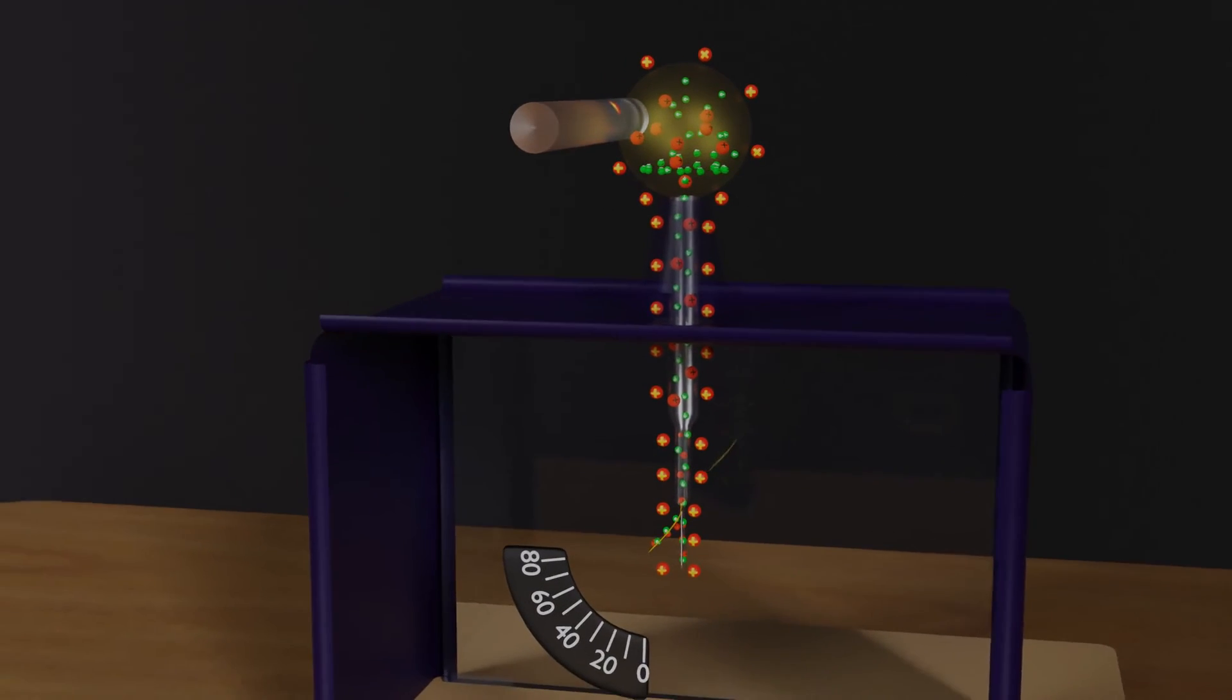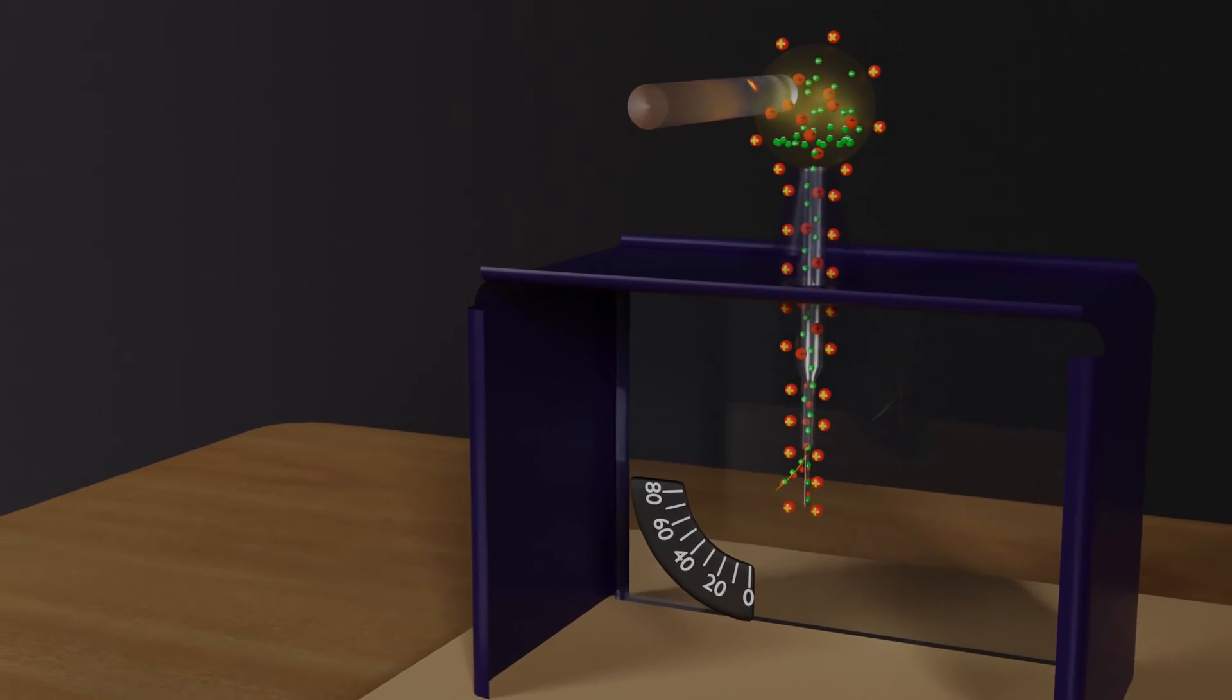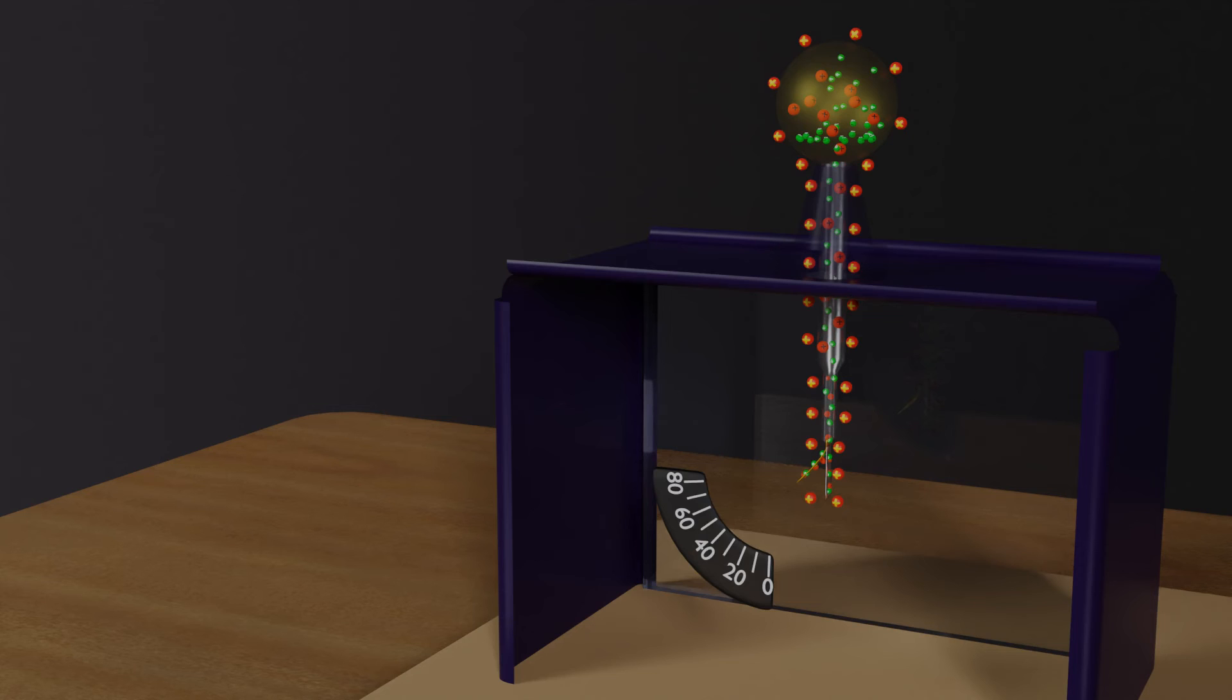Even after removing the glass rod, the electroscope will remain positively charged and the gold leaf will remain in a deflected position. This process of charging a body by direct contact is called charging by conduction.